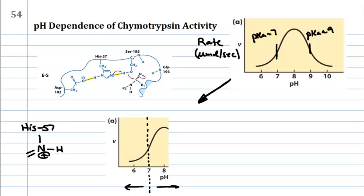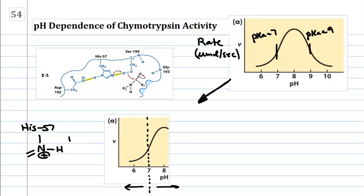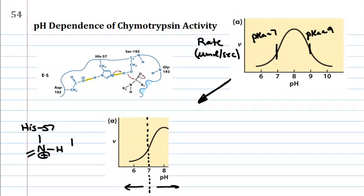So, but below seven, below pH seven, we've got some problems because histidine 57 is in the acid form. That's a big problem because histidine 57 gets the party started with this enzyme activity right here.